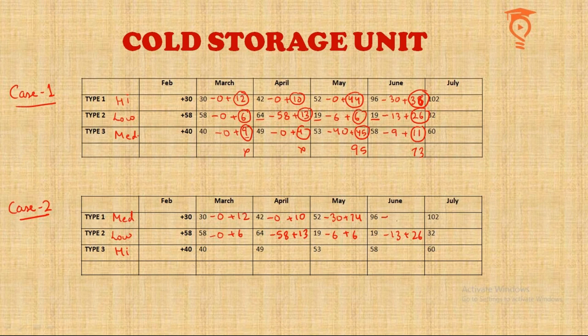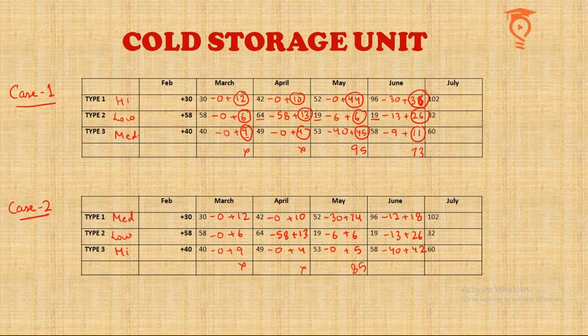Then 12 is subtracted making it 84, and 18 is added. For Type 3 as high quality, the 40 added in February are subtracted only in June, so until then it's only additions: 9 added, 4 added, 42 added. Adding up the totals: early months are too small; one month sums to 85 — very close — and the next sums to exactly 86!